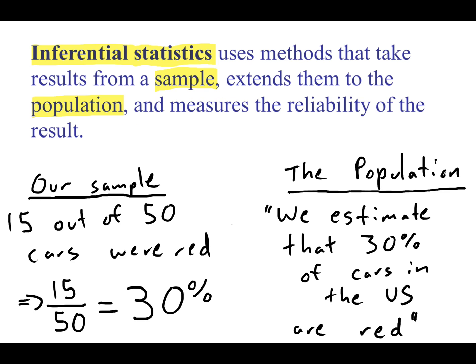For our car example, we had 15 out of 50 cars were red. That meant that 30% of our sample was red. We can make an inference by talking about the population from this sample and say, hey, because 30% of our sample was red, we might think that it might be reasonable to say something like, we estimate that 30% of cars in the United States are red.